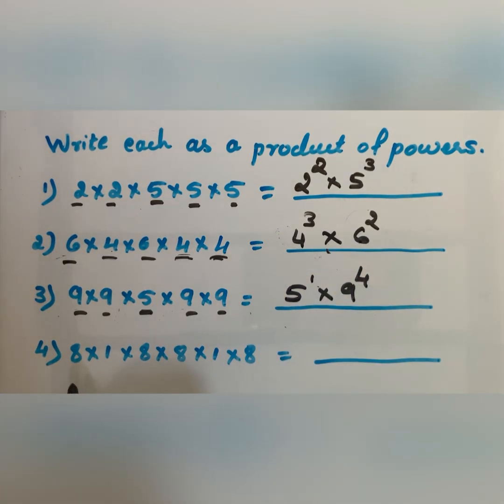Next question. Here the smaller number is 1. 1 is taken 2 times, so 1 to the power 2, or 1 squared. 8 is taken 1, 2, 3, 4 times, so 8 to the power 4.